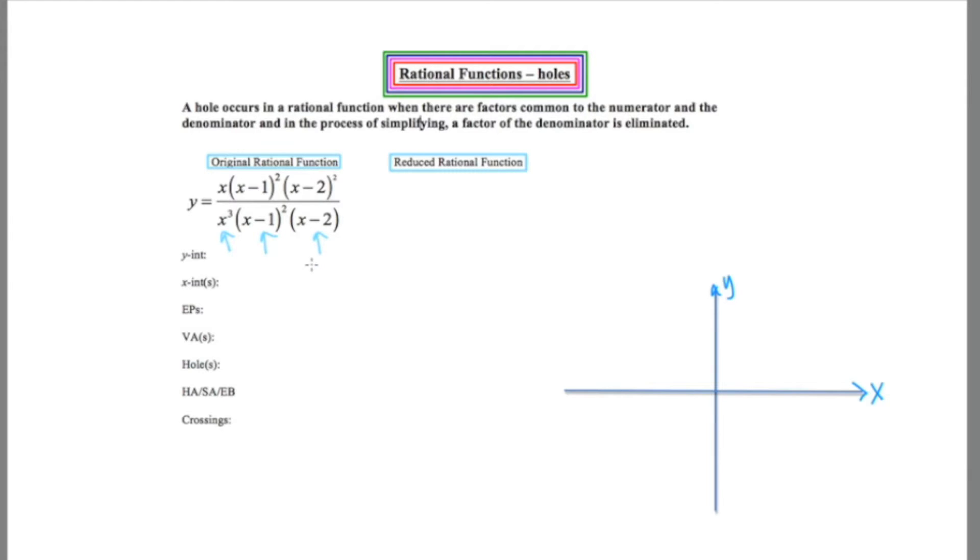So let's go ahead and reduce this and see what happens. Let's see if any factor of the denominator just disappears or becomes eliminated. So x over x cubed is x squared. (x - 1) quantity squared over (x - 1) quantity squared just goes away altogether. And then we're left with (x - 2) on the top, because the one on the bottom canceled with one on the top.